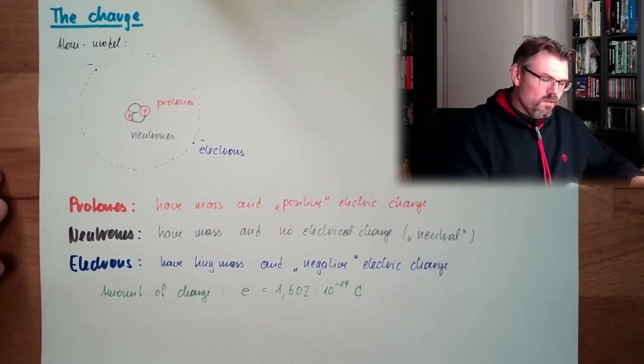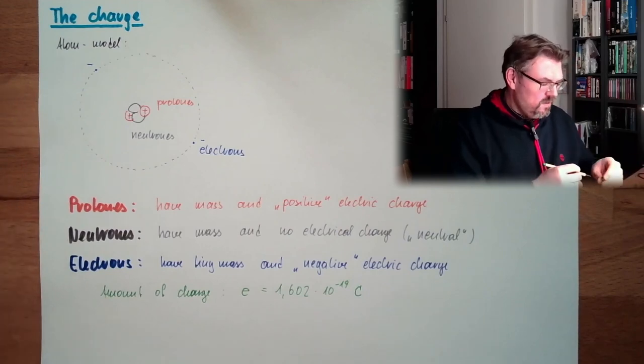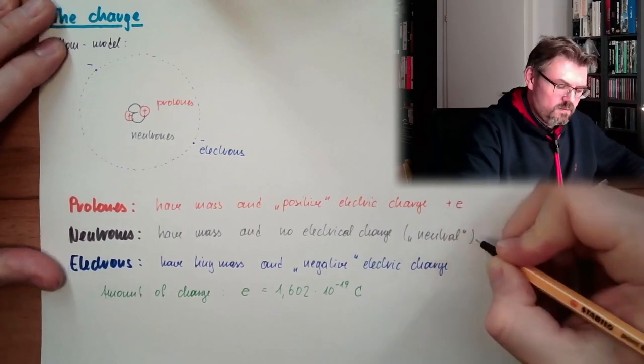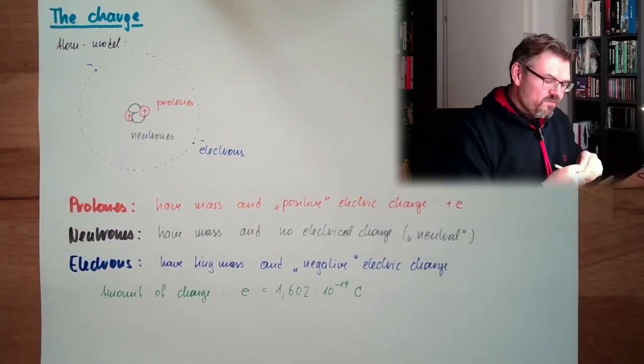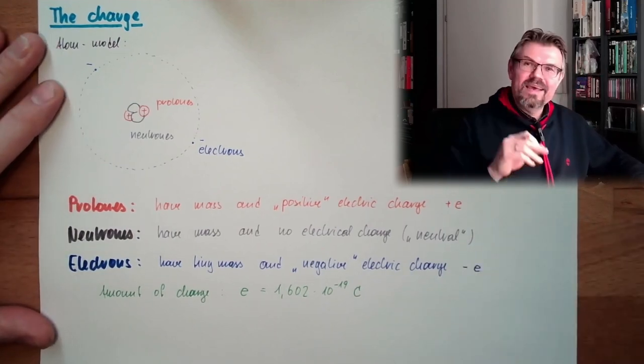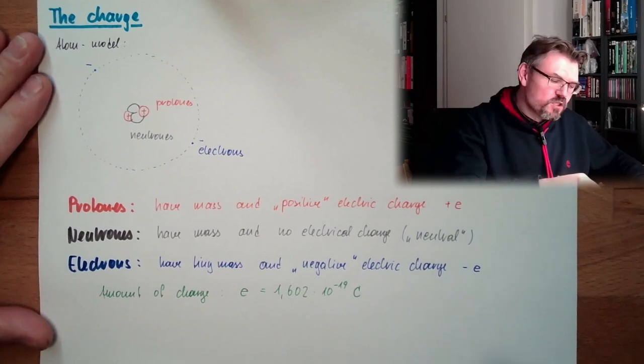That's one proton. One proton has plus E. One electron has minus E. It's the same amount of charge but in the opposite direction.